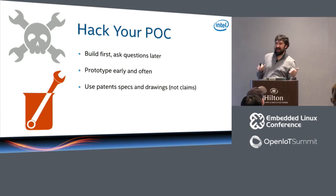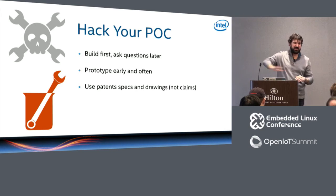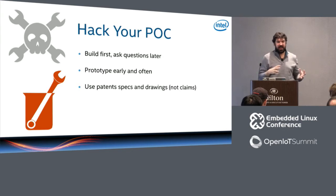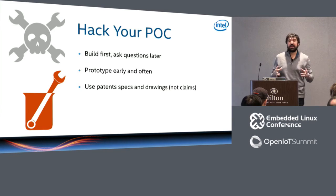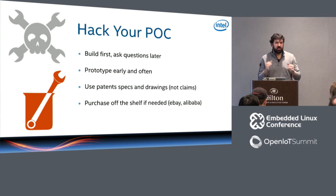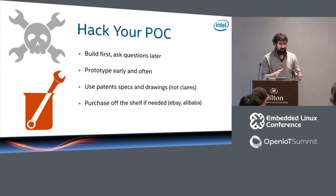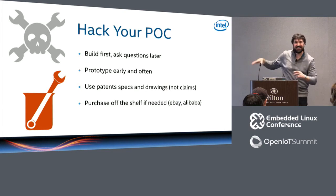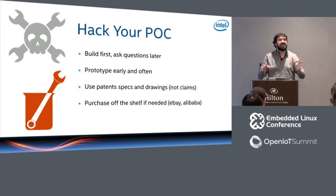Ben also mentioned patents — and I'm not a lawyer. It's not the claims I'm talking about, but rather the specs and the drawings. There's a lot of information you can get just by looking at those. Finally: purchasing off-the-shelf items. You want to know your customers' requirements, and you won't know them until you get stuff in customers' hands. Use eBay, Alibaba, Amazon — whatever you've got to do. Find something, glue it together, get it in the customers' hands, and see if it's what they want.